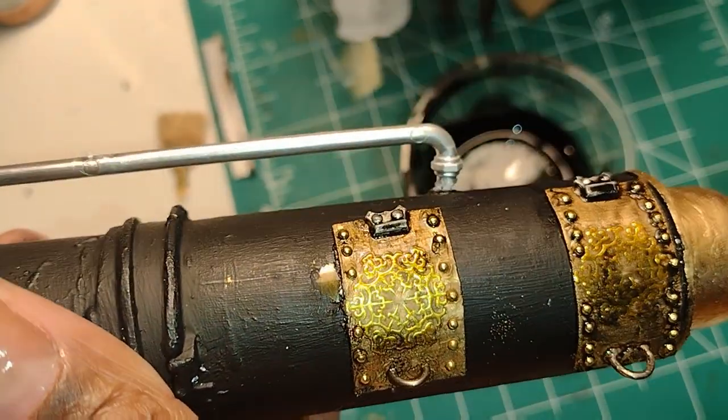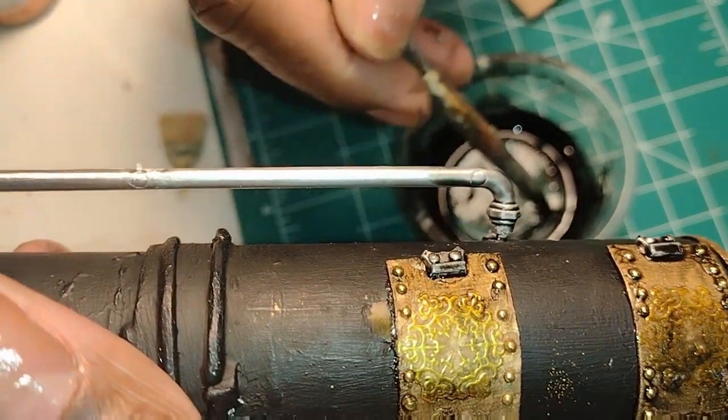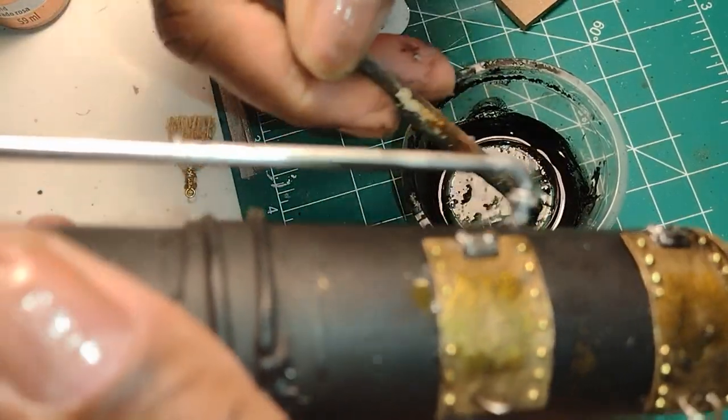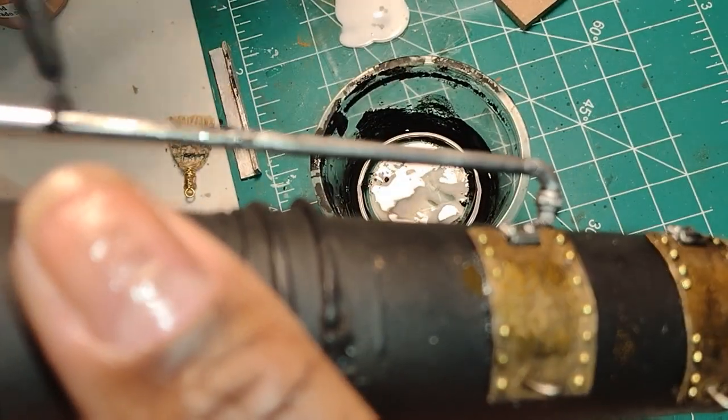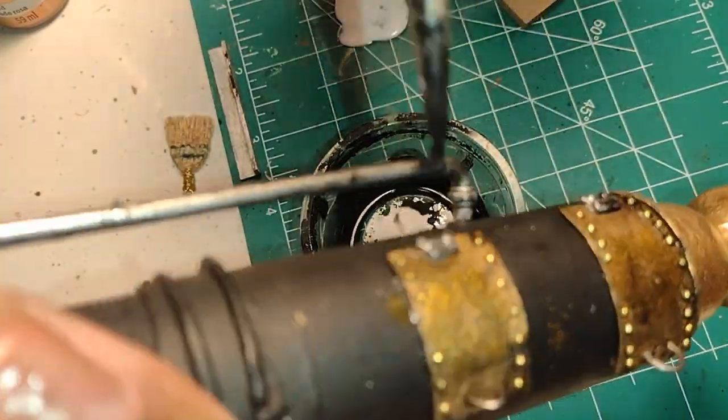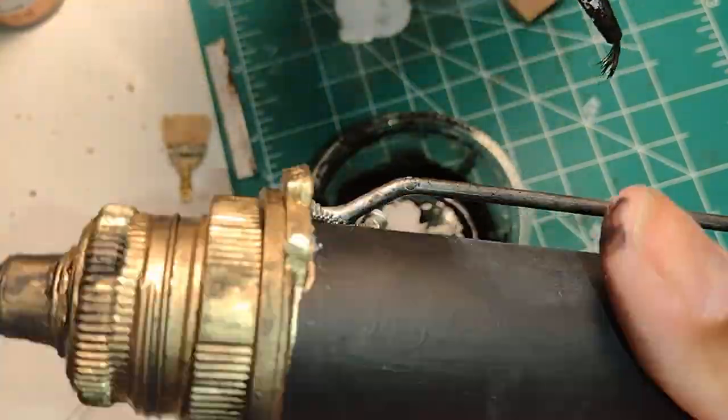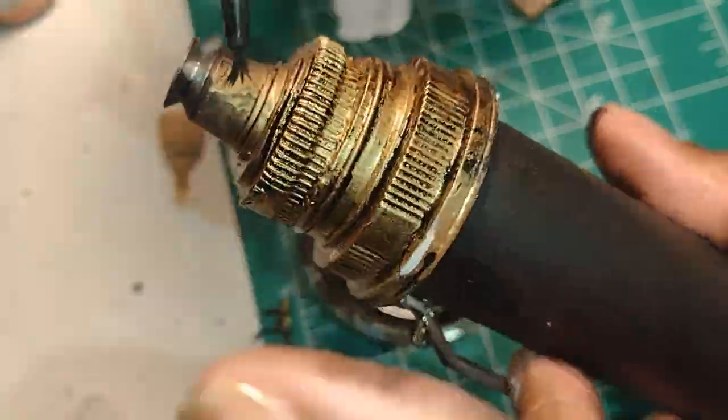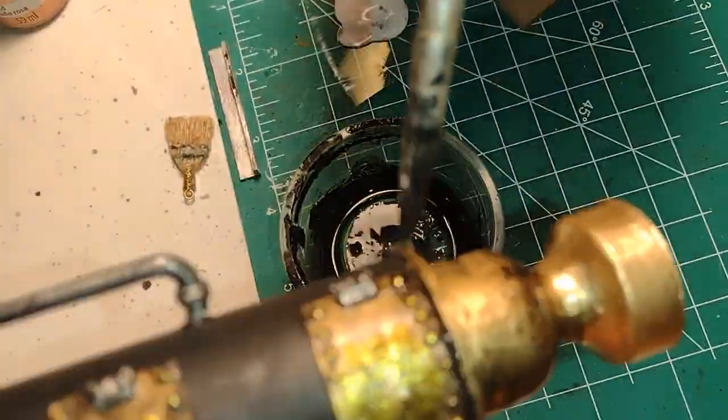This is not something you're going to rush through because you really want it to have the look of layered dirt. You can actually use more than one color. I just used black, but you could use black, brown, even gray in multiple layers. You're only limited by your imagination. This is definitely an opportunity to play and see what looks good to you.